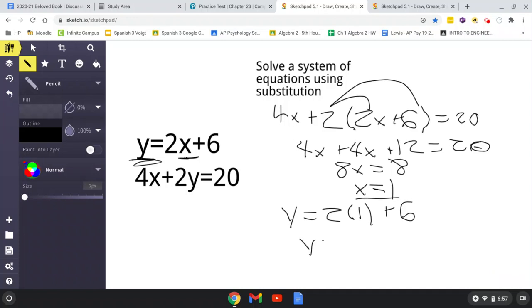And just simplify—y equals 8. That is your answer. So if you were to submit your answer as a coordinate pair, it would be (1, 8). Just put it in terms of x comma y, and that is your answer.